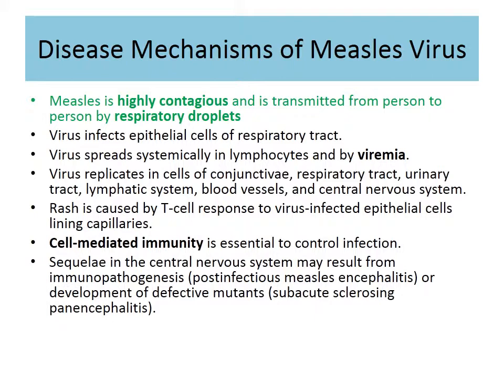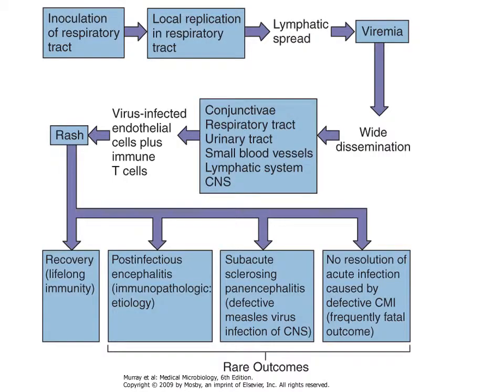If the virus becomes latent in the brain, the most dreadful complication of measles — one I always include on exams — is SSPE: subacute sclerosing panencephalitis. This is a devastating condition affecting children in Illinois, for example those unvaccinated or from immigrant populations, where the entire brain becomes involved.